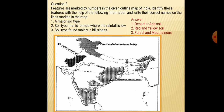Second is the soil type found where rainfall is low — that is red and yellow soil, found in some parts of Andhra Pradesh, Tamil Nadu, Kerala, Orissa, and some parts of eastern states like Arunachal Pradesh, Tripura, and Mizoram.